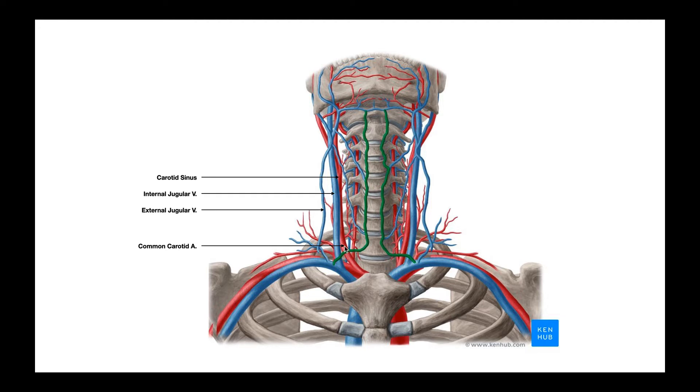So if we follow that common carotid artery upwards, we're going to reach this thing right here called the carotid sinus. We're not going to worry too much about that here. But notice at the carotid sinus, also called the carotid body, the common carotid artery bifurcates into two separate vessels.